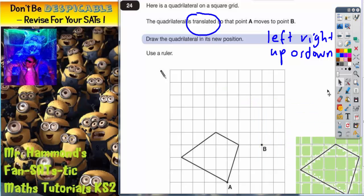The second method would be to count squares from this point A to all the other corners. So from point A to get to this corner here, I could go one across and three up. One across, three up. So I'd do exactly the same from point B. One across and three up. One, two, three would go there. So that's that corner dealt with.